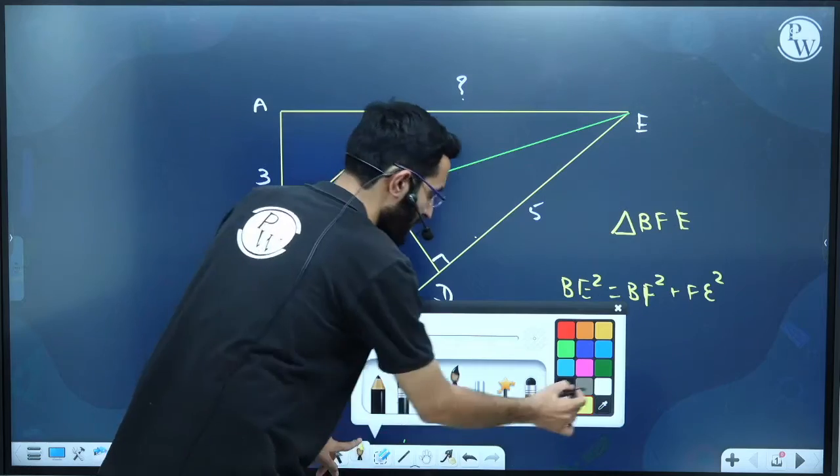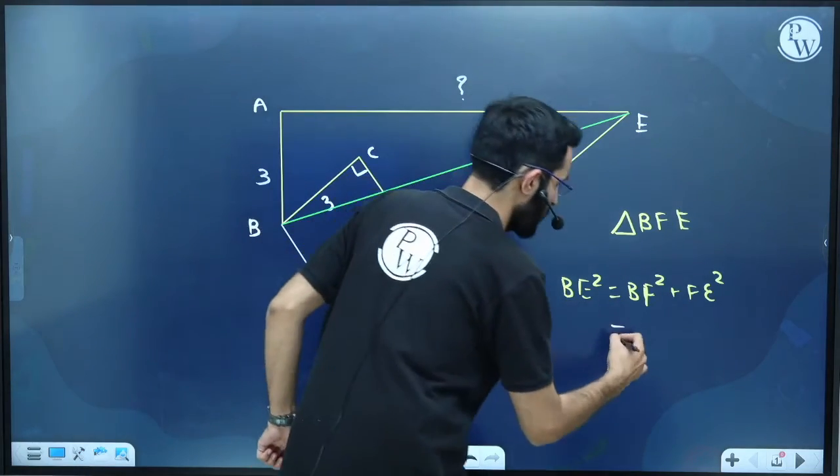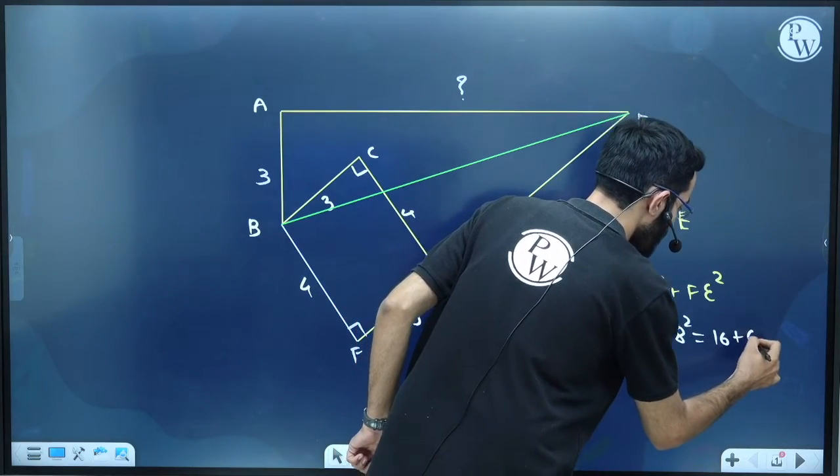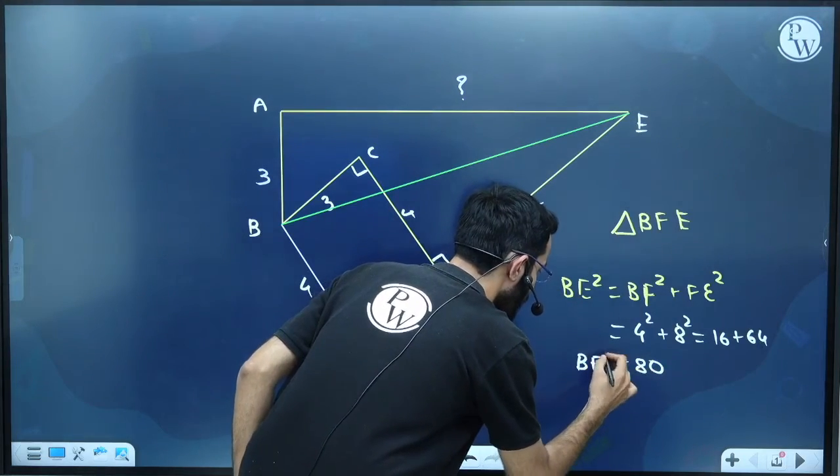Now you guys know BF is nothing but 4 and FE is 5 plus 3, which is 8. So this will be 4 square plus 8 square, which is 16 plus 64, which is nothing but 80. BE² = 80.